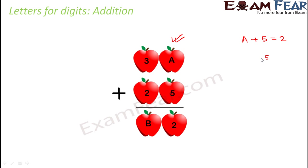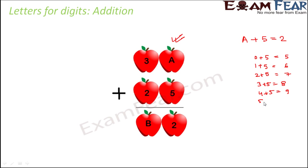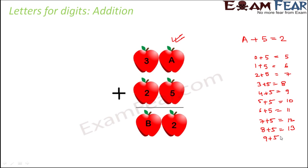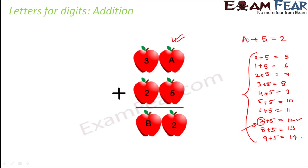Let us do some hit and try. 5 is fixed. Adding 0 to 5 gives 5; 1 gives 6; 2 gives 7; 3 gives 8; 4 gives 9; 5 plus 5 is 10; 6 plus 5 is 11; 7 plus 5 is 12; 8 plus 5 is 13; 9 plus 5 is 14. These are all possible values when A ranges from 0 to 9. Do you see any sum where the units digit is 2? Yes — 7 plus 5 is 12, units digit is 2. So A could be 7.